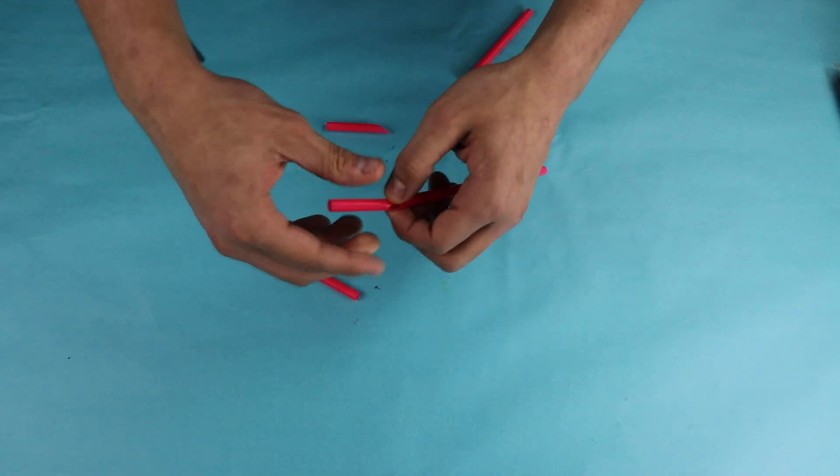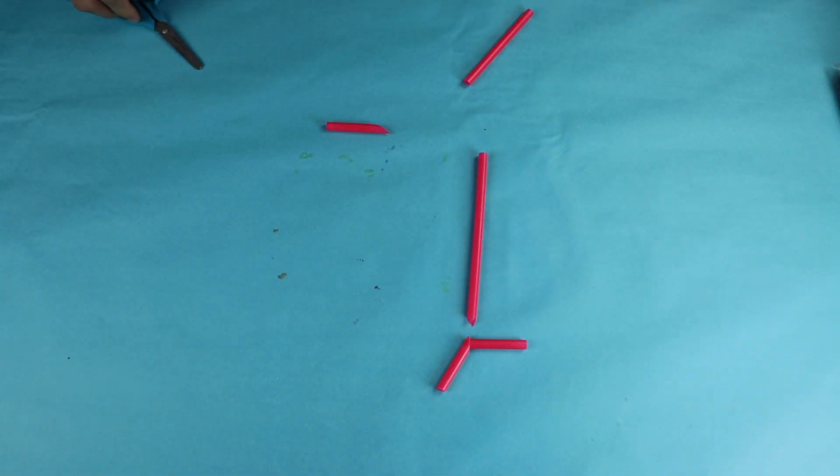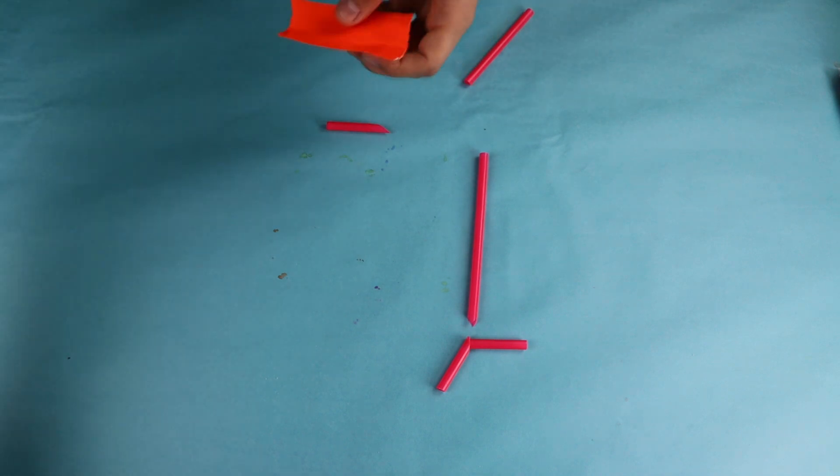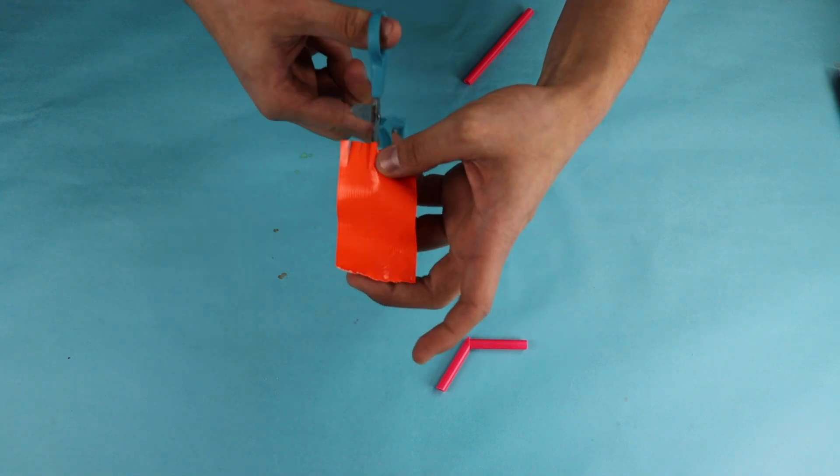Step four, for this step it's kind of hard to explain, but pretty much what you want to do is take both ends of the straws that you cut and kind of put them together so that they make a Y shape. But while doing this step, you want to make sure that there's enough room for air to pass through.